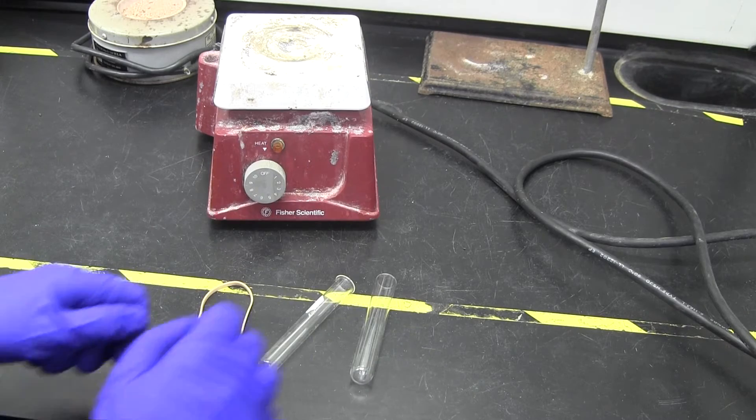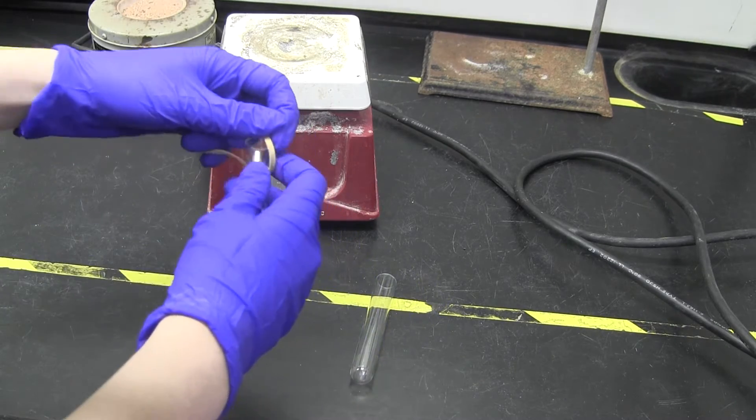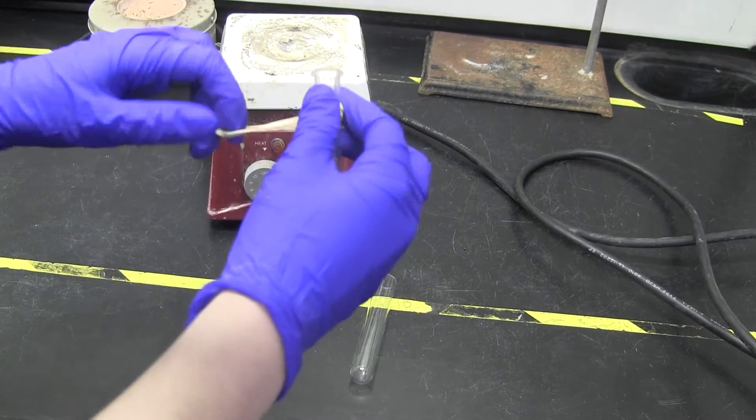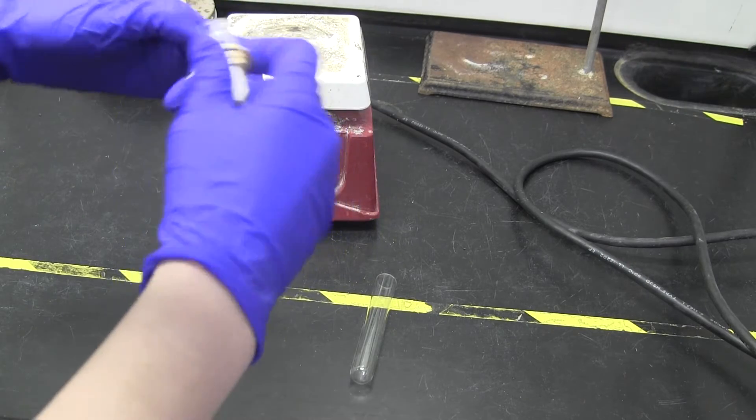You will also need a hot plate and a rubber band. Put the rubber band around the small test tube. This will provide friction to keep the inner test tube from falling into the outer one.